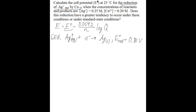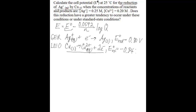Since silver is reduced, copper must be oxidized. Copper is going to lose electrons, and when electrons are lost they are part of the product. When writing these balanced half-reactions, you have the loss of two electrons because copper goes from a charge of 0 to a charge of 2+. To find the oxidation cell potential, you look up the standard reduction potential for the reverse of this reaction and take the negative of that value, which gives negative 0.34 volts.